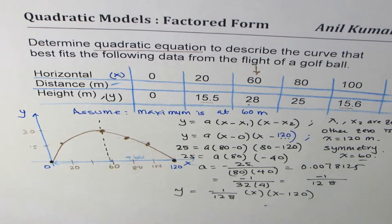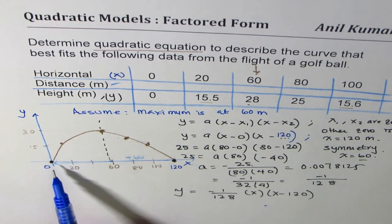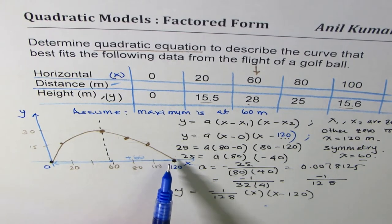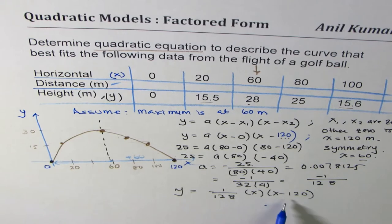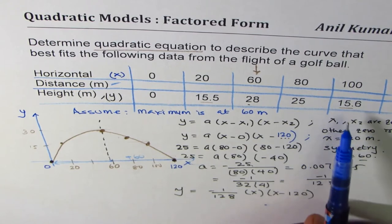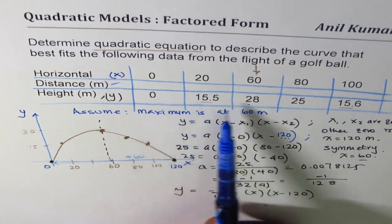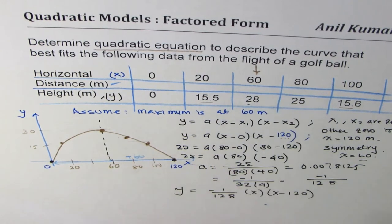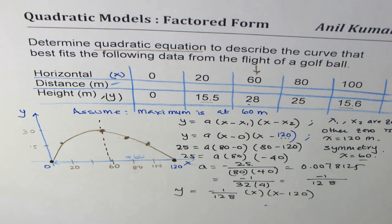The data represents the projectile path of a golf ball, modeled as a quadratic equation in factored form. We made two key assumptions: first, that the maximum height of 28 meters occurs at 60 meters horizontal distance; and second, that the other zero is at 120 meters — the same distance from the axis of symmetry. I'm Anil Kumar, thanks for listening. You are most welcome to post questions. Thank you and all the best.